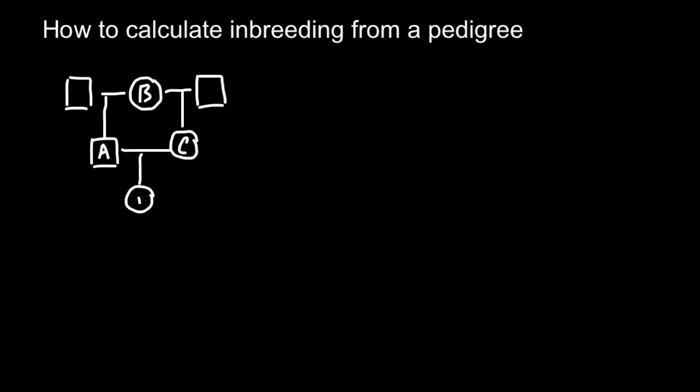I do not put any numbers for these two males because when we calculate inbreeding using a pedigree, we are only interested in common ancestry. So for person I, we only care about direct common ancestors. For example, this person here would not be an ancestor for person C, but this person would be a common ancestor to C yet would not be a common ancestor to A. So as you see, the only common ancestor here would be B.